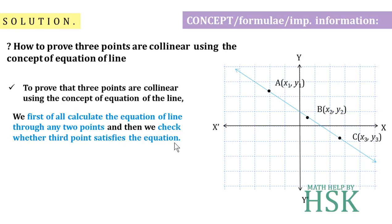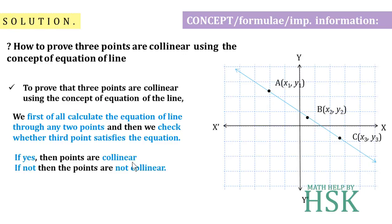We calculate the equation of the line through points A and B, and then check whether the third point C satisfies that equation. If the third point satisfies the equation passing through A and B, then the points are collinear. If not, then the points are not collinear.